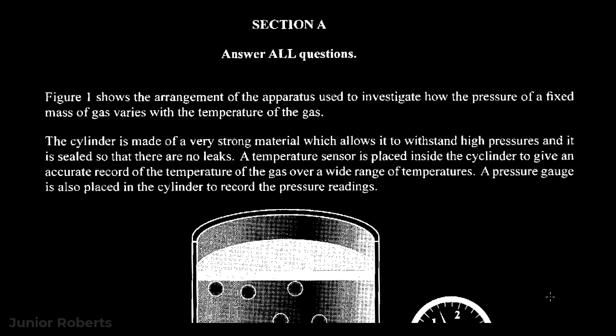Junior Roberts here with realjuniorroberts.com. This is question one of the CSEC Physics January 2022 past paper. We're going to be working question one in this video, and in future videos we're going to be working the remaining questions. So it says figure one shows the arrangement of apparatus used to investigate how the pressure of a fixed mass of gas varies with the temperature of the gas. This question is related to the gas laws — once we see something about a fixed mass of gas we should right away think about gas laws.